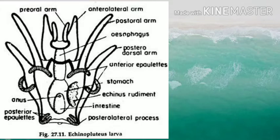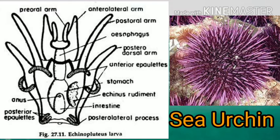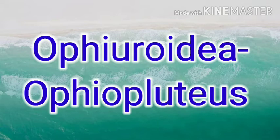Long paired ciliated arms are found in echinopluteus. The pre-oral arm is present but the post-oral arm is absent. The other three arms are the anterolateral, post-oral, and posterodorsal arms. Mouth, anus, and gut are all well developed. Now, moving to the larvae of Ophiuroidea.